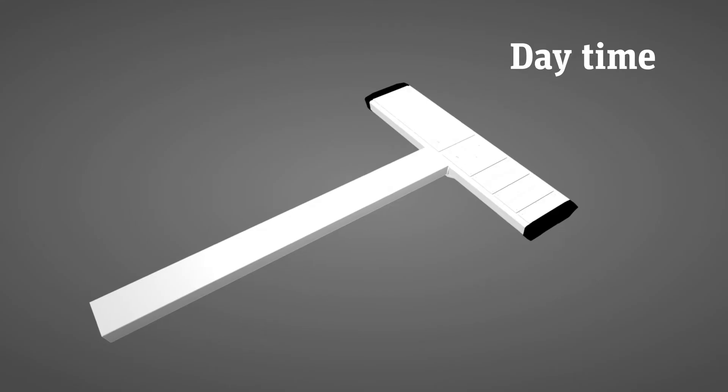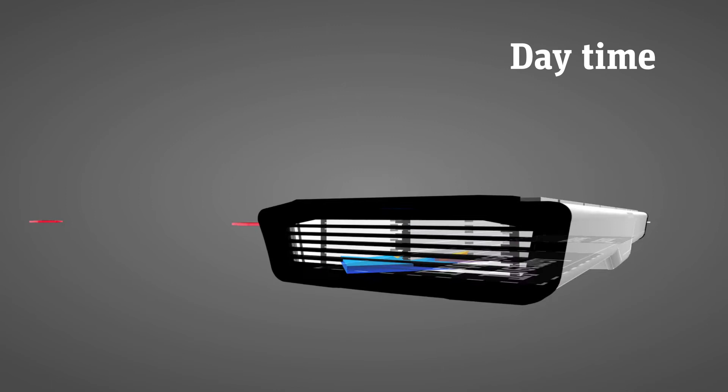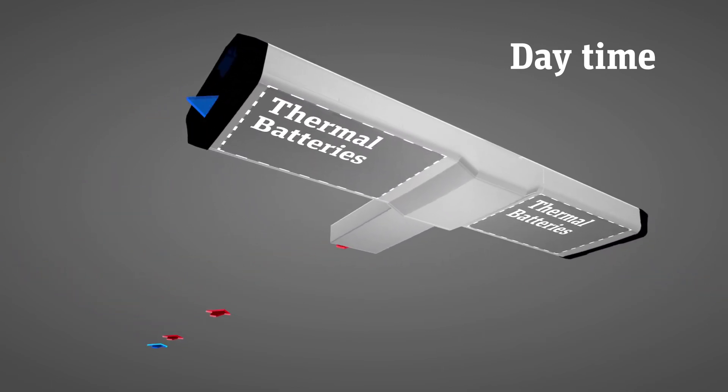Coolphase makes use of the difference between daytime and nighttime temperatures. So during the day we're taking warm external air, we're passing it through the thermal batteries which are absorbing that thermal energy and thus introducing a cooling load to the room.